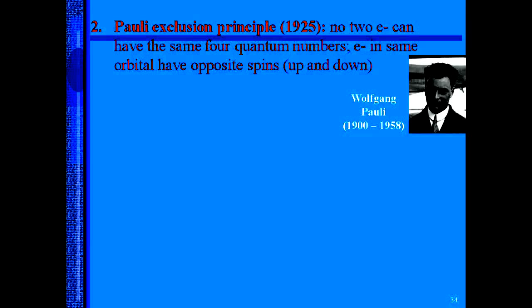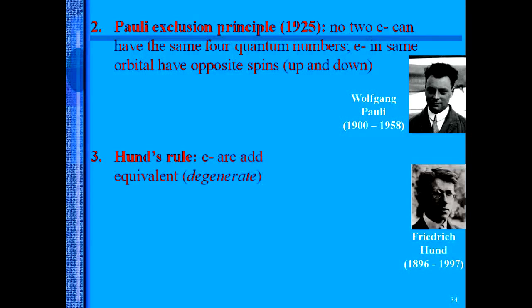An important principle that we need to talk about is the Pauli exclusion principle. In this principle it states that no two electrons can have the same four quantum numbers. So electrons in the same orbital must have opposite spins in order to reduce the repulsion.